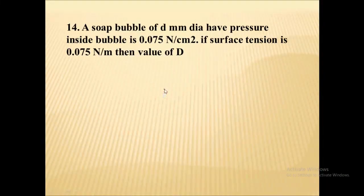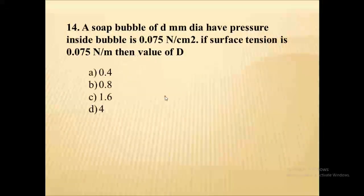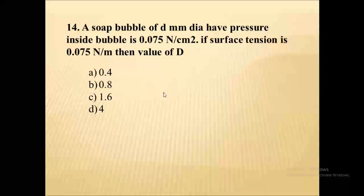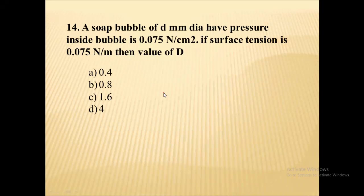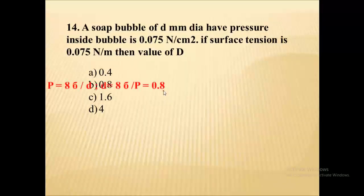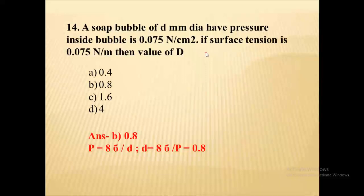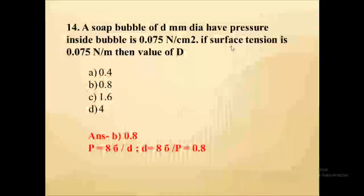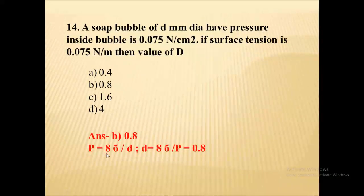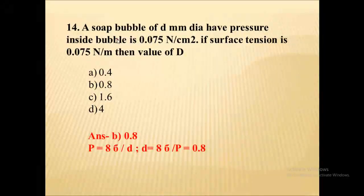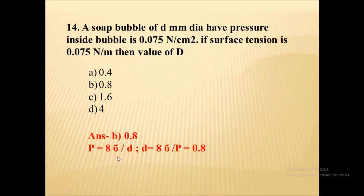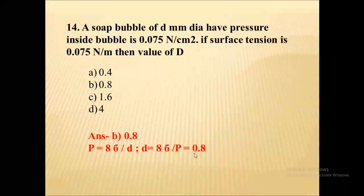A soap bubble of d mm diameter has pressure inside the bubble of 0.075 newton per square meter and surface tension σ = 0.075. Find the value of d. Since it is a hollow bubble, pressure equals 8σ/d. Putting the given values, d comes out as 0.8.